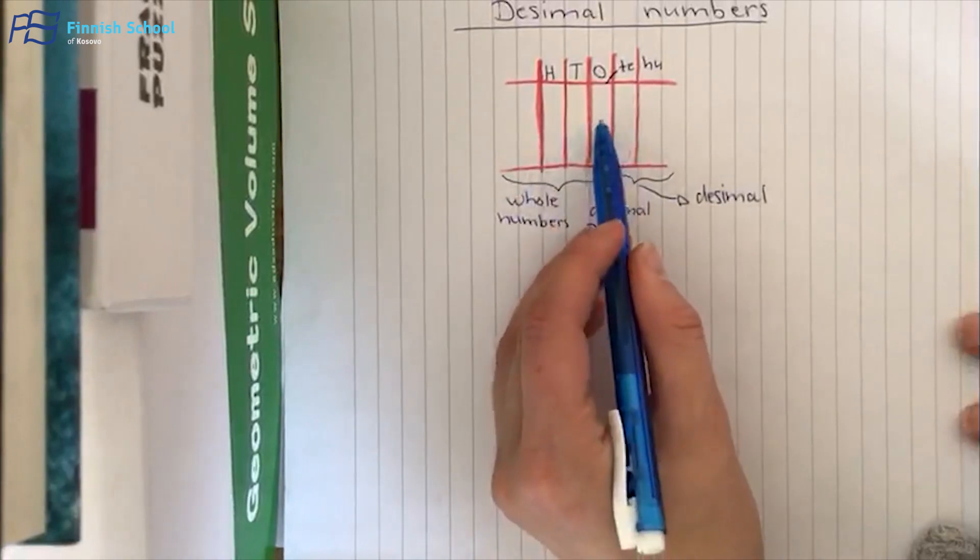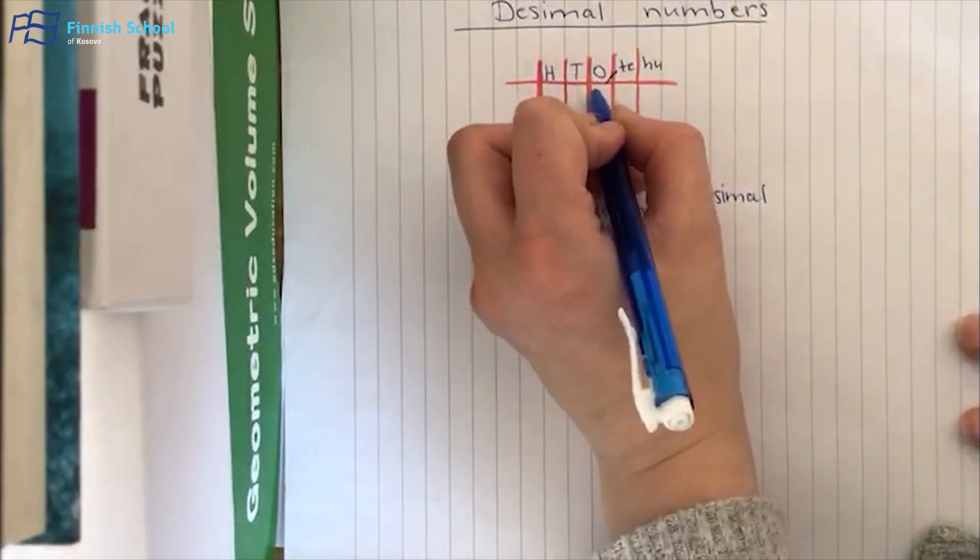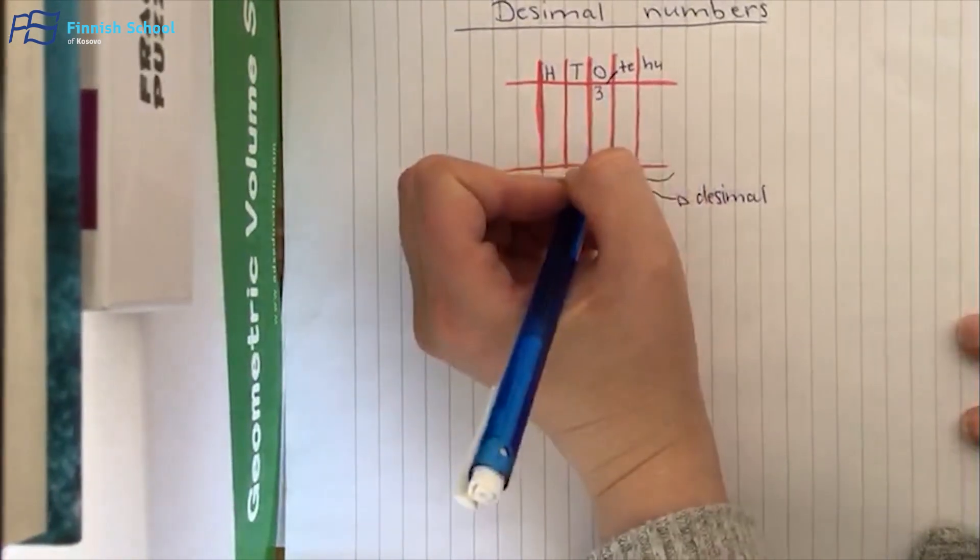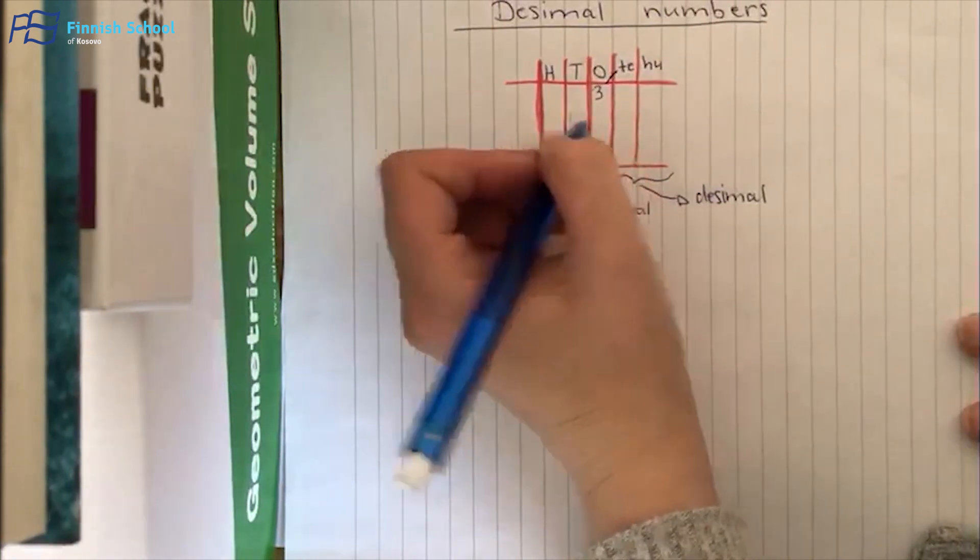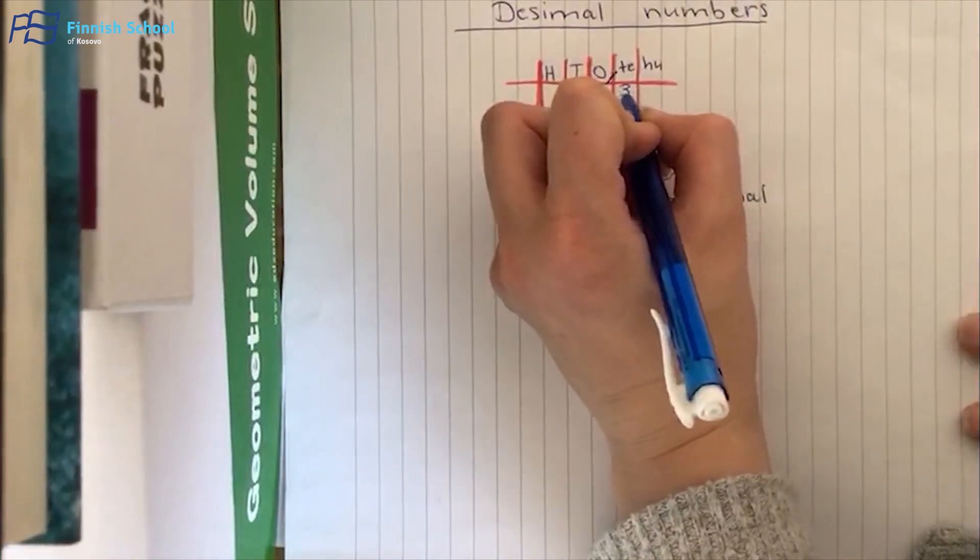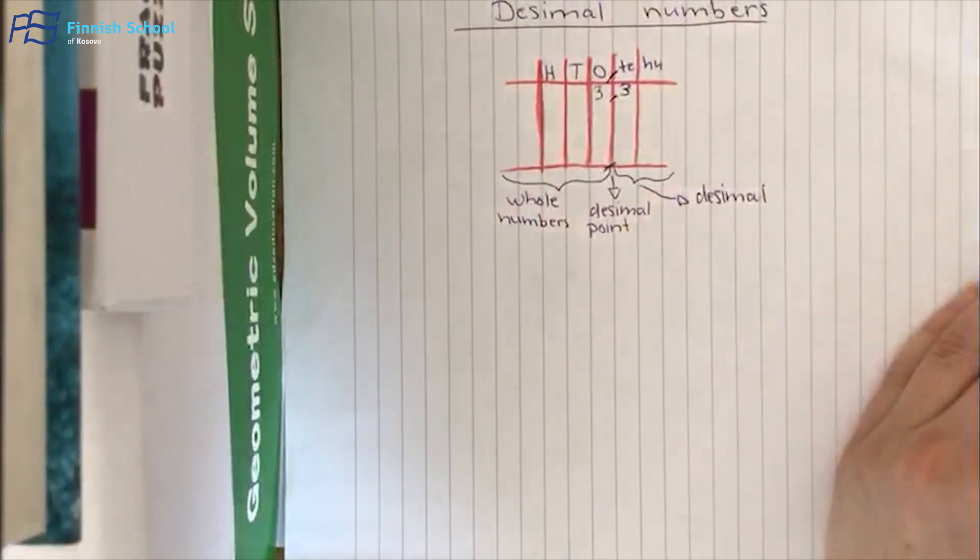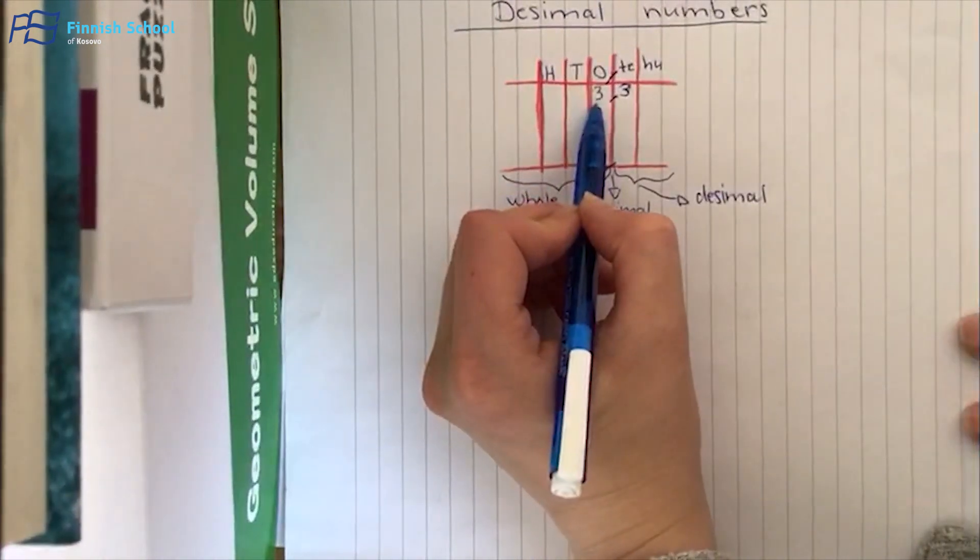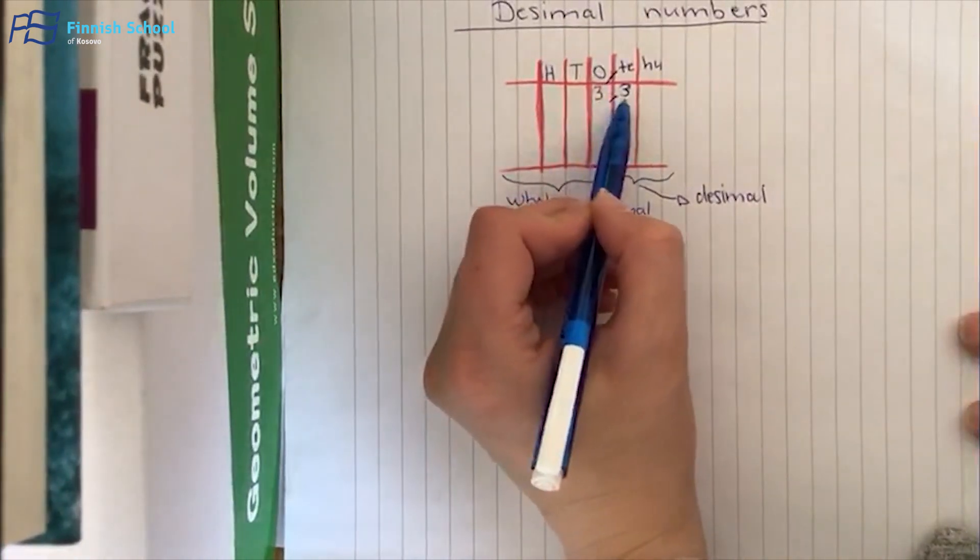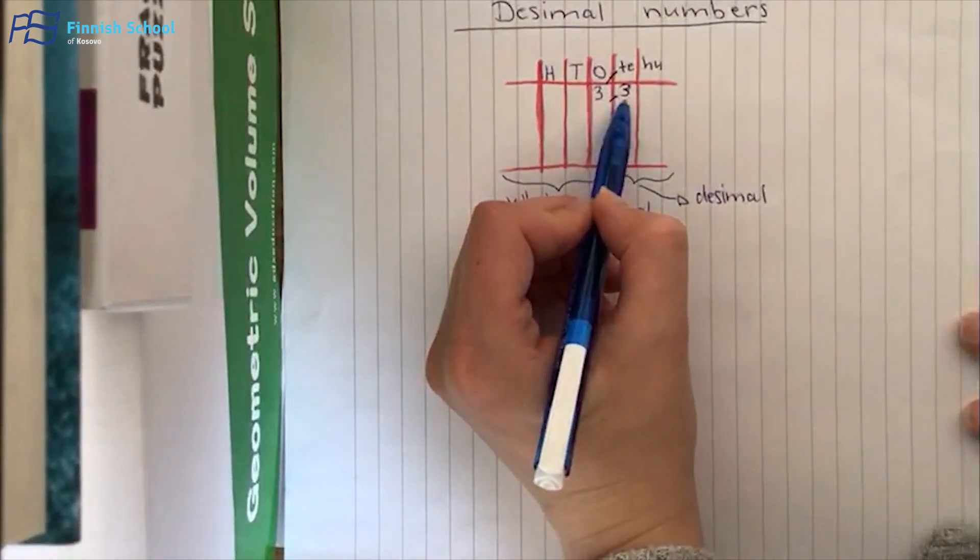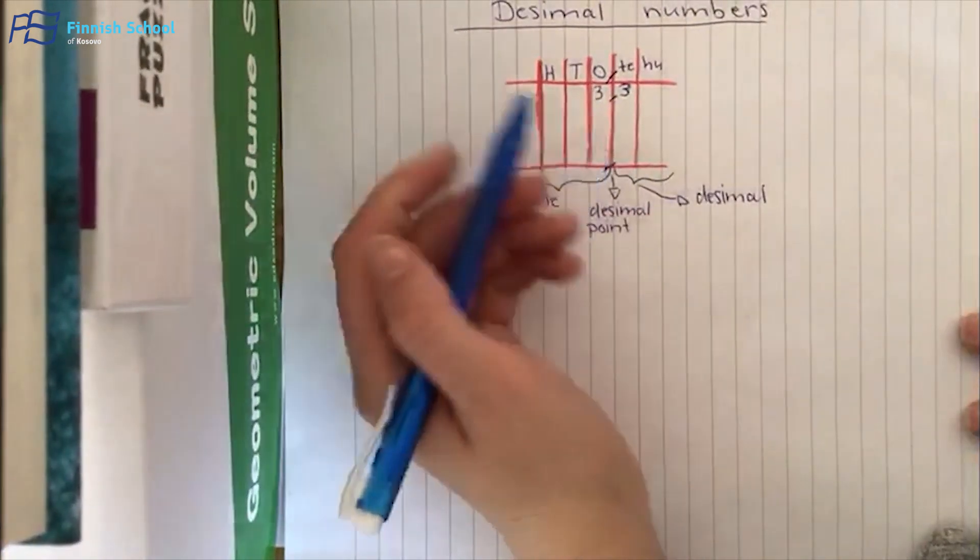For example, if I have the number three wholes and three tenths, I would put it like this. So I have three wholes and three tenths.